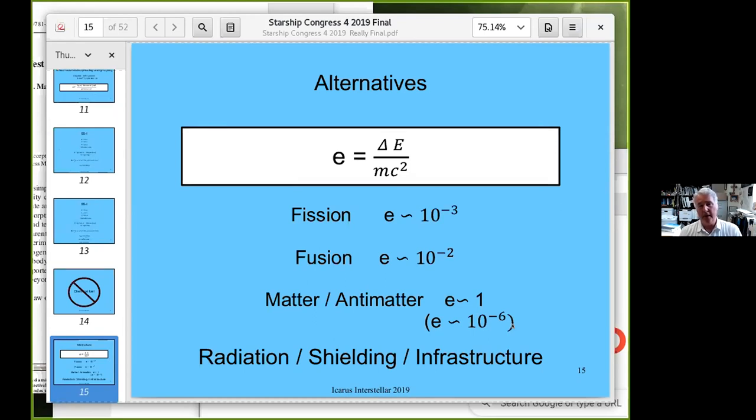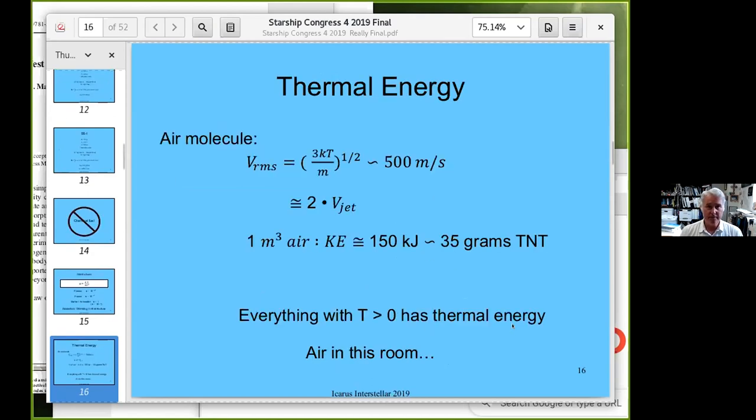Alternatives. If you look at ΔE/mc² for fission, the efficiency is 10^-3. One thousandth of the mass of a large nucleus when it fissions turns into energy. For fusion, you might do better, maybe one percent. Matter-antimatter, you could claim that's one, but if you actually want to produce the antimatter, that's not very efficient by modern means. The efficiency is quite low, 10^-6. And if you're using fission fusion or matter-antimatter reactors, you'd have a good deal of radiation to deal with, shielding, infrastructure, and so on.